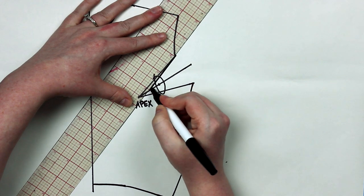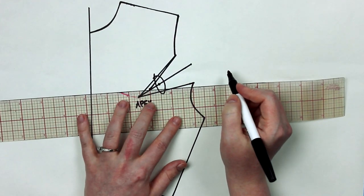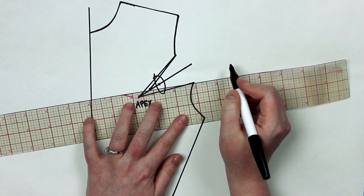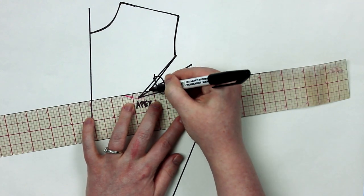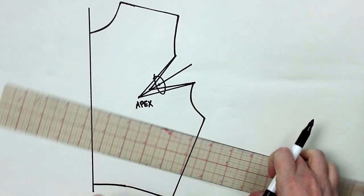Now we can draw on our new dart by starting at the opening and drawing dart legs going up to our new dart tip. Now all that's left to do is add our seam allowance and true our dart.